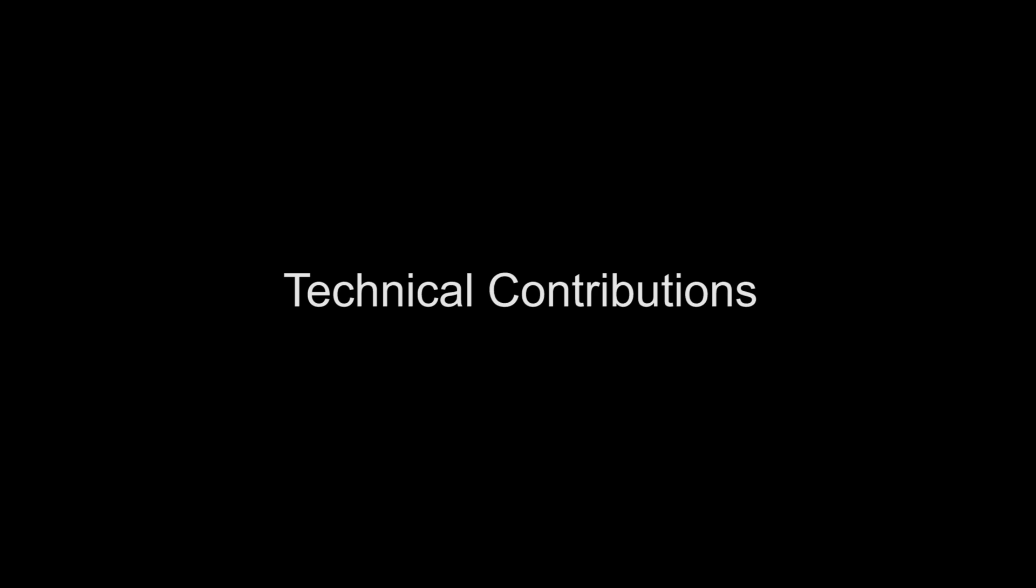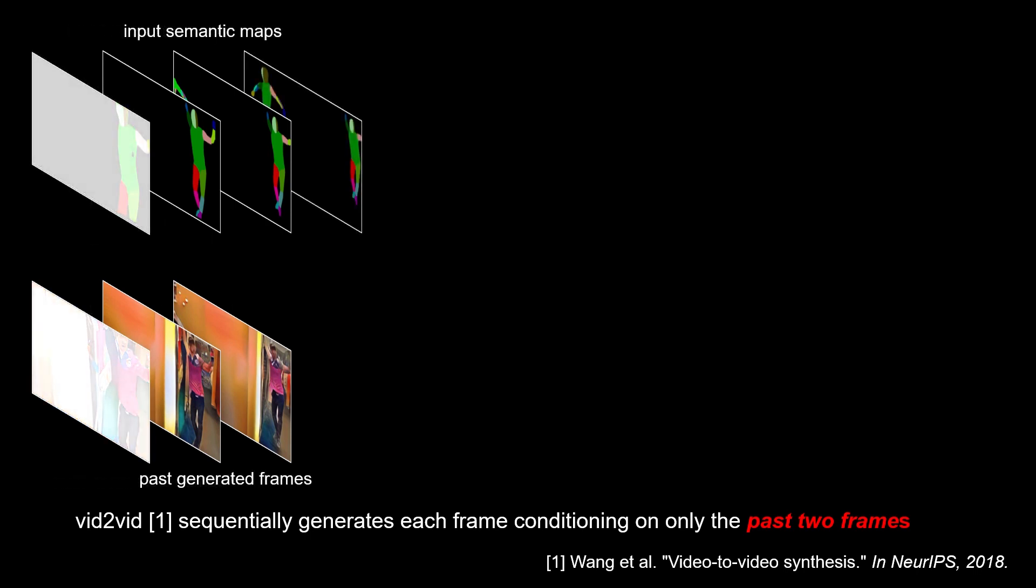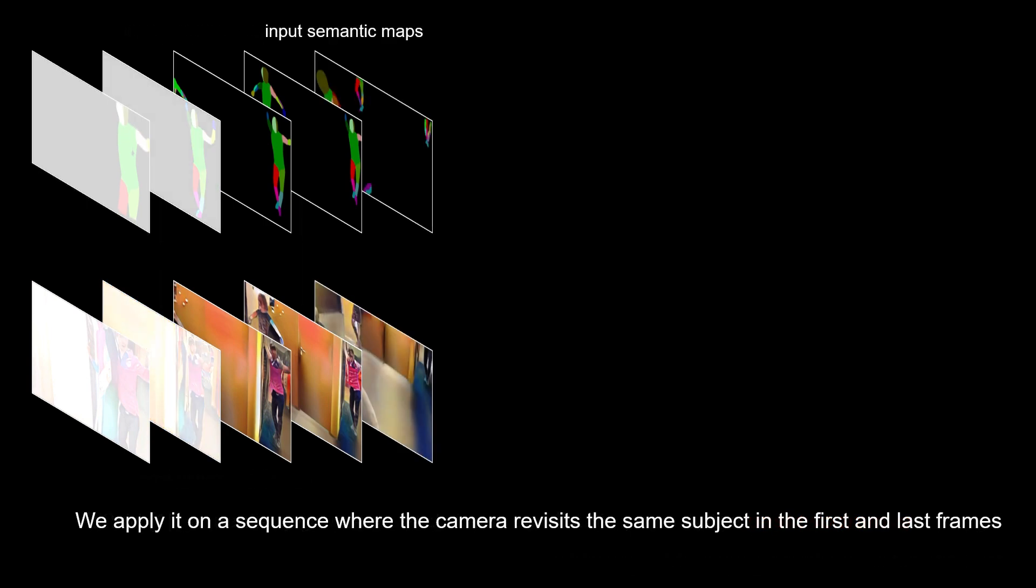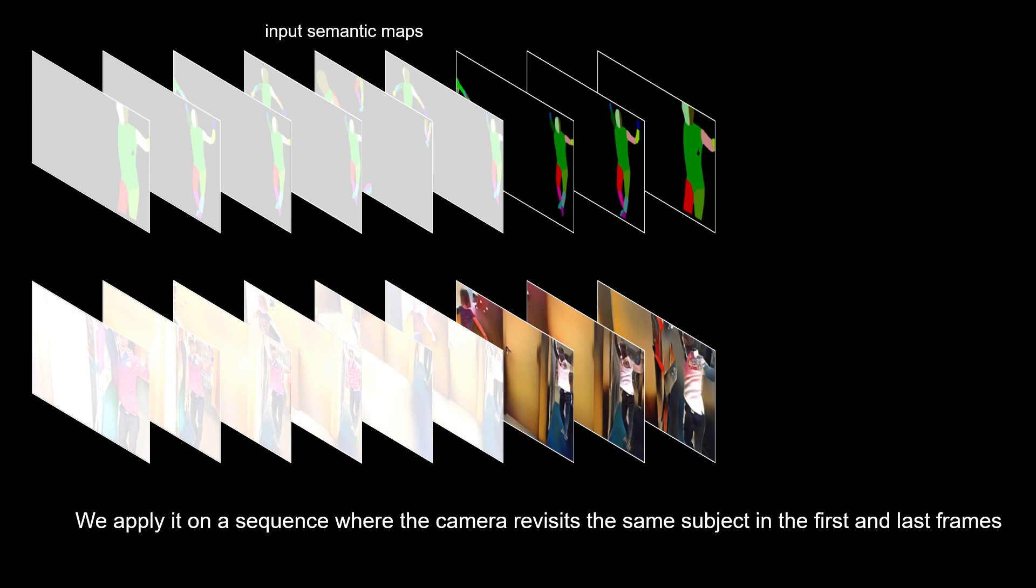Previous methods like vid2vid generate each frame sequentially based on only past few frames. While this reduces flickering in output video, it fails to maintain long-term consistency. Here we apply it on a sequence where the camera revisits the same subject in the first and last frames.